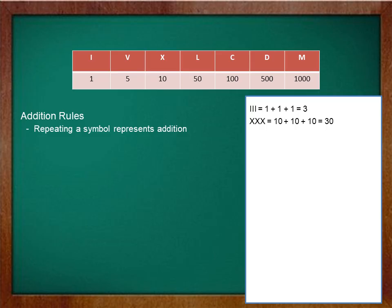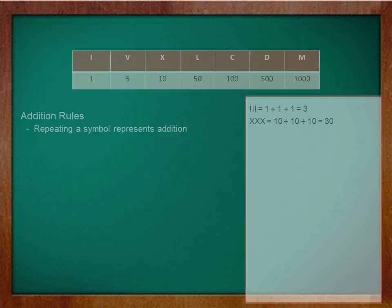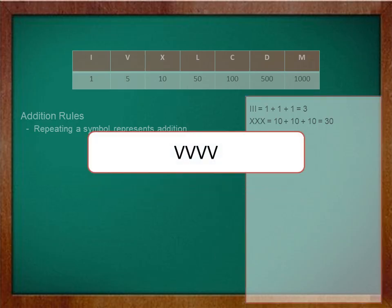Now let's go to the next rule. The next rule says that a symbol should not repeat more than three times. So you cannot write V, V, V, V because V is getting repeated four times.